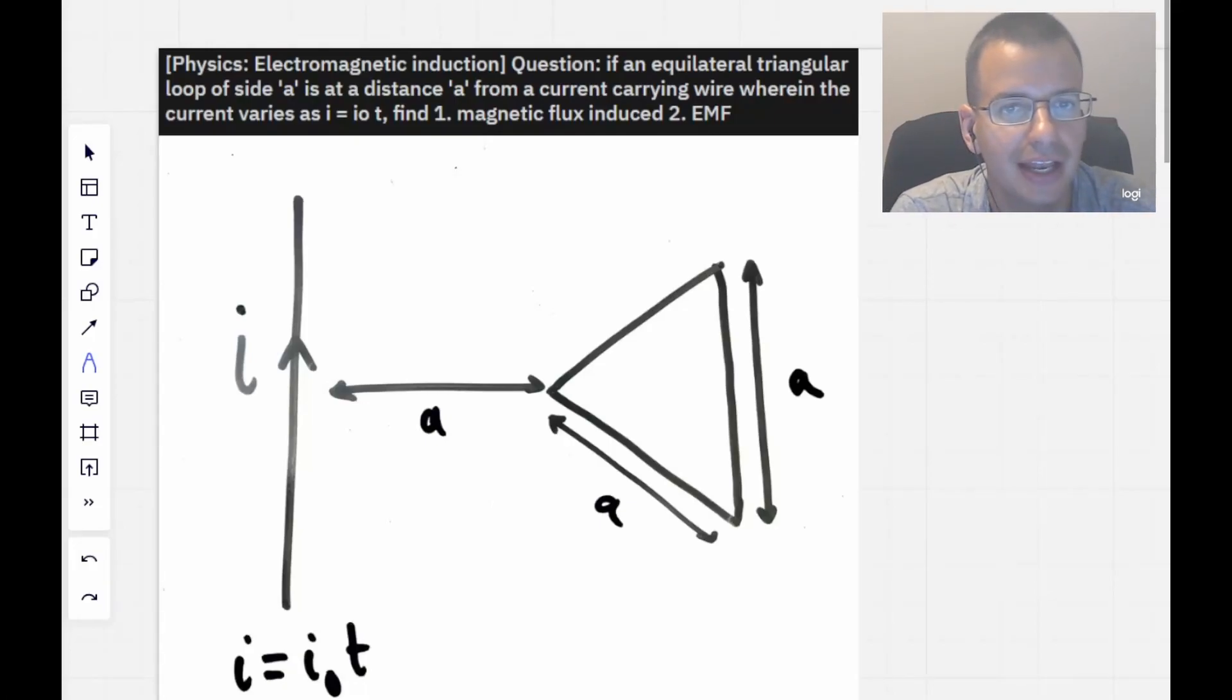Question! If an equilateral triangle loop of side A is at a distance A from a current carrying wire, wherein the current varies as I equals I initial times T, find both the magnetic flux induced and the electromotive force.